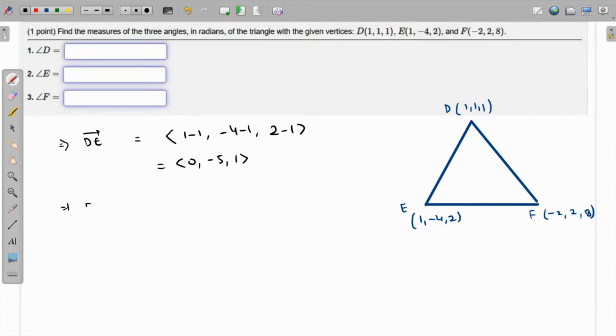Likewise, I'm going to find EF. EF is -2 minus 1, 2 minus (-4) which is plus 4, and 8 minus 2, so that will be <-3, 6, 6>.